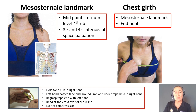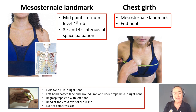First we need to palpate and find the mesosternale landmark. We're looking for the midpoint in the sternum at the level of the fourth rib, which means we need to palpate for the third and fourth intercostal spaces.